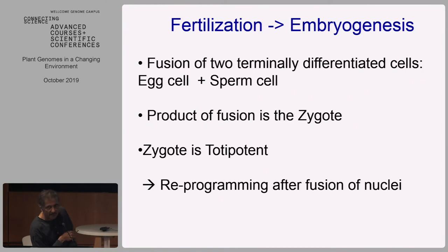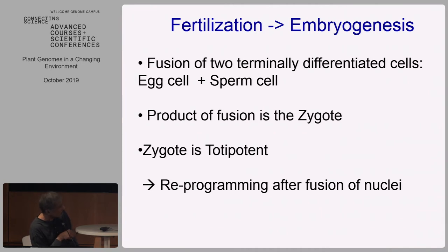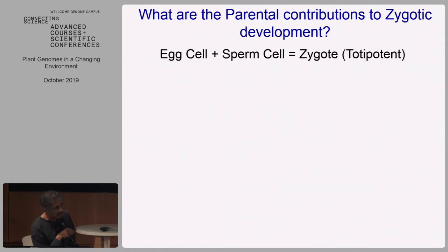This is an unusual cell in the sense that it is a product of two terminally differentiated cells. Both the egg cell and the sperm cells have reached the end of their differentiation programs — if they don't fertilize, that's it, they die, they will not further differentiate. But when they fuse, you have a cell that is totally potent. It's the ultimate stem cell in the sense that it can regenerate all the cells and tissues of an organism. This implies that there must be extensive reprogramming — something very fundamentally important must be going on in the zygote.